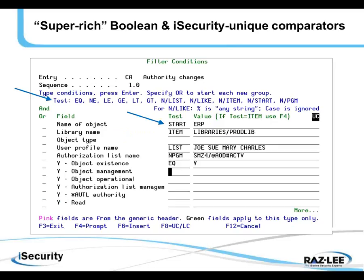We provide super-rich Boolean and iSecurity unique comparators. Going down the list: the name of the object needs to begin with ERP in order to pass the filter condition. The library name — if the library name in the event is an item which appears in the list of production libraries, which is in the group of libraries, then this condition is met. All we have to do is define the list of production libraries, put them in this group, and we can search in a dynamic format. User profile name can be one of the list of names that appear here.